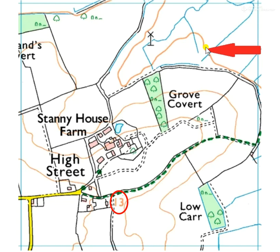On Ordnance Survey maps, contour lines go up in intervals. They go up in either intervals of 5 — so starting at 0 it would be 5, 10, 15, 20, 25, etc. — or in 10s, so 10, 20, 30, 40, 50, for example.